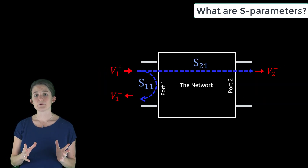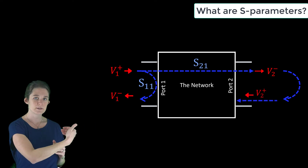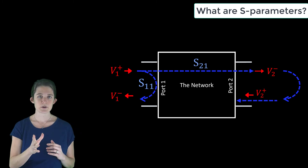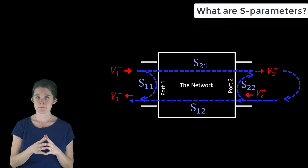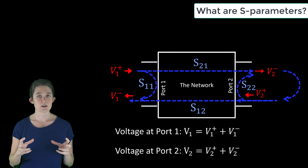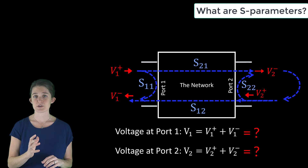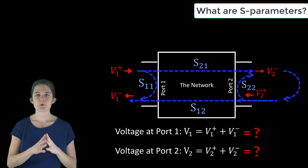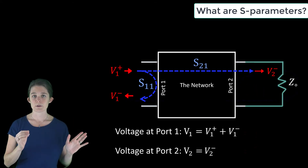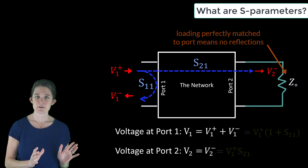It is possible for the signal exiting at port two, v2-minus, to reflect off something external to the network and re-enter the system as a second input at port two, v2-plus. Since a voltage measurement only tells you the total voltage at the node and cannot determine where that signal came from, this external reflection would make it impossible to accurately measure the effect of the input at port one. Therefore, to measure S-parameters, all ports other than the input port must be match-terminated with their characteristic impedance, preventing external reflections.